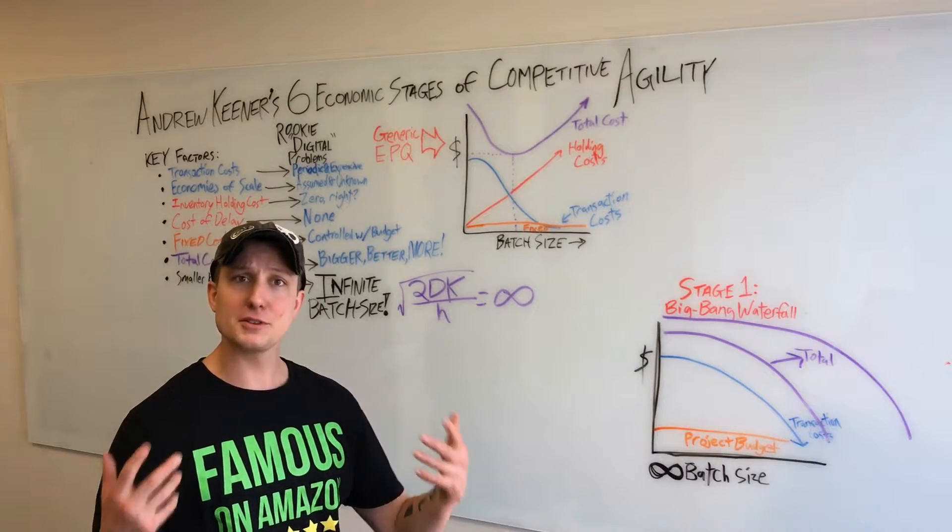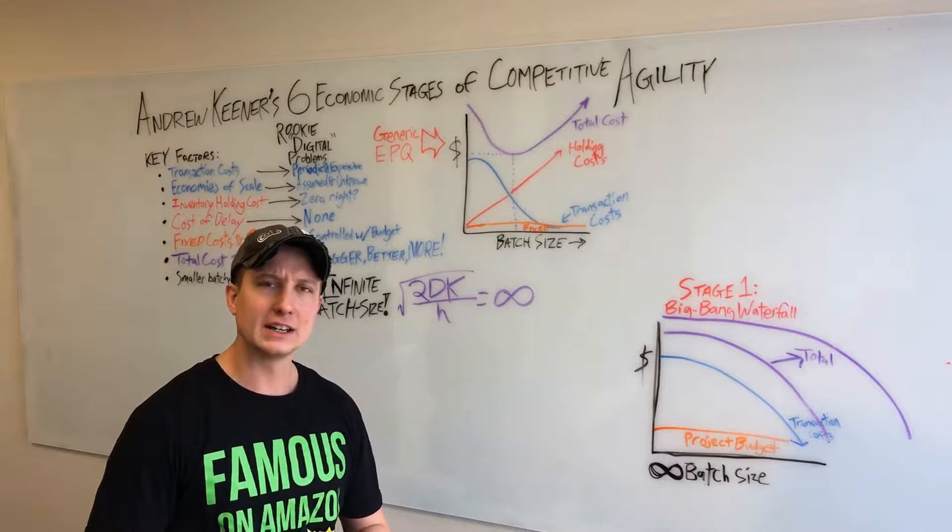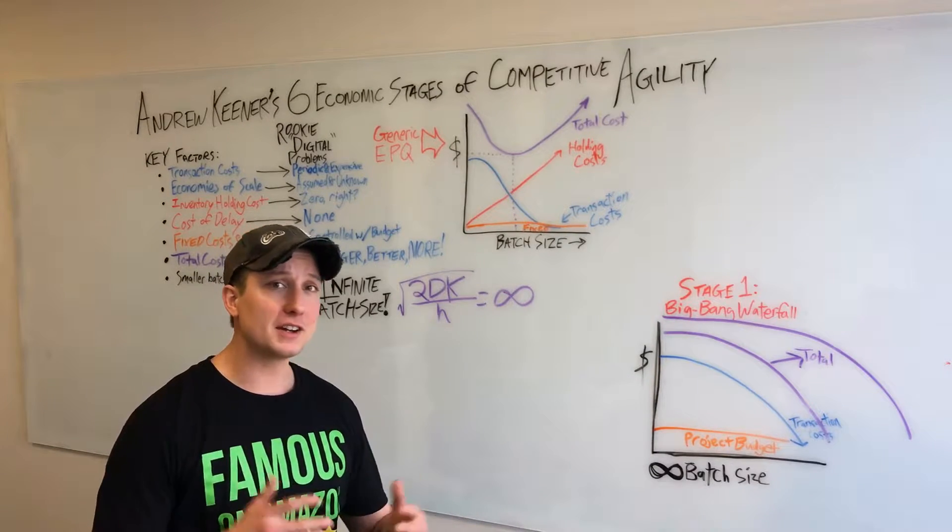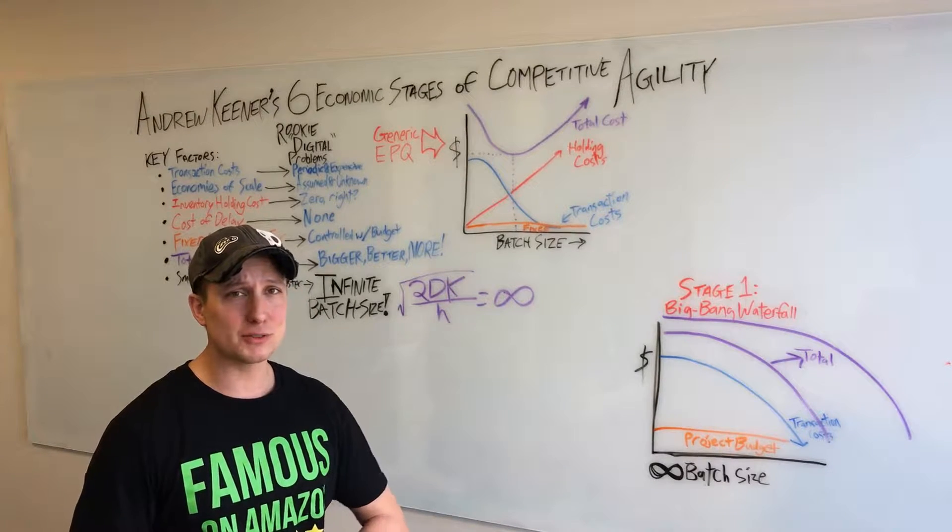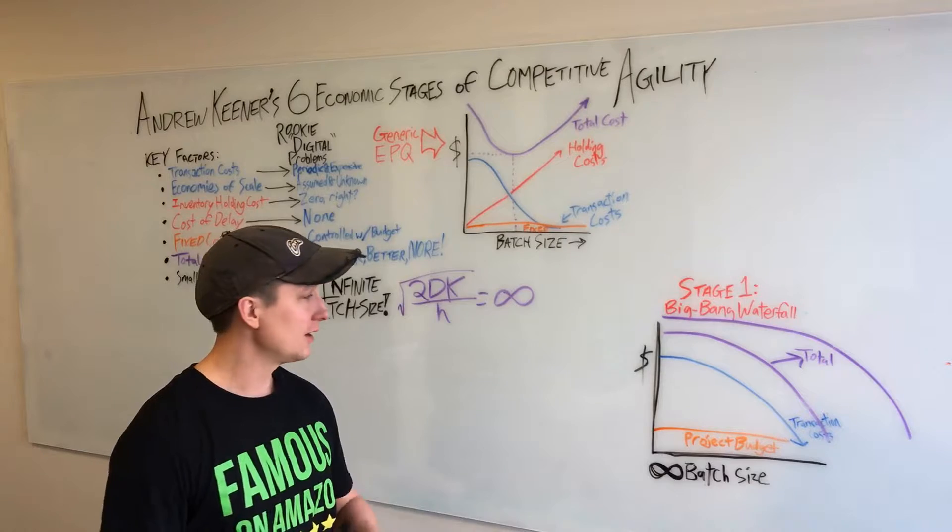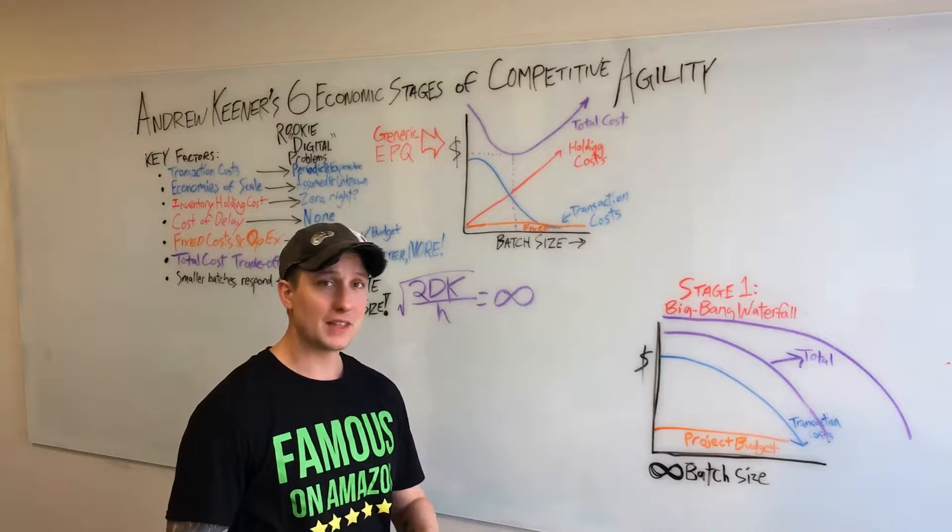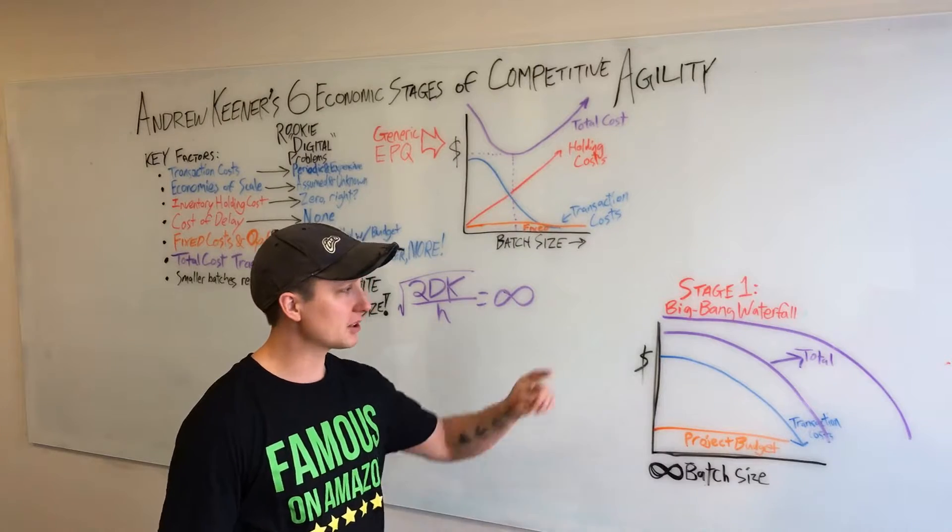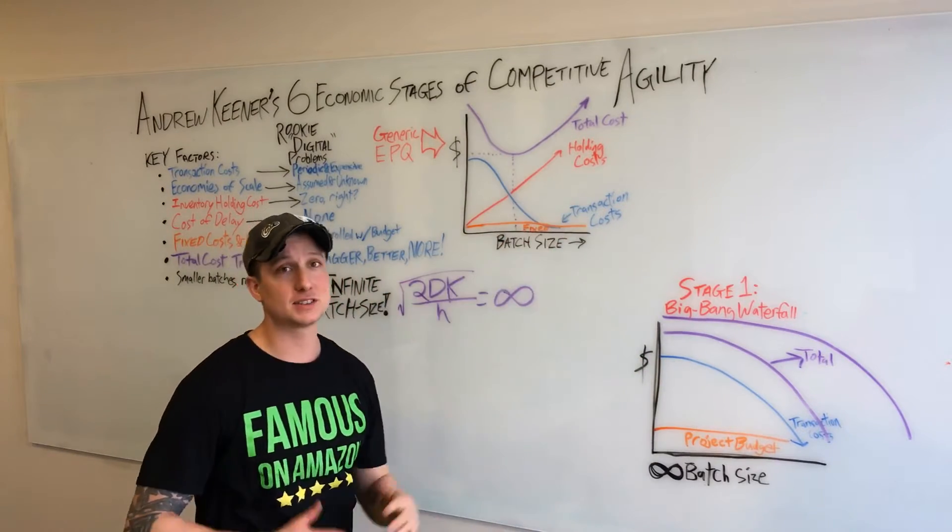Now this is where Agile came from in the first place. We saw that these three to five year projects would get created and funding would get canceled in the middle of the project. That was its own form of agility. After all, project budget could just be chopped. That was the only fixed cost that would control total cost because we were ignoring holding cost or cost of delay to market.